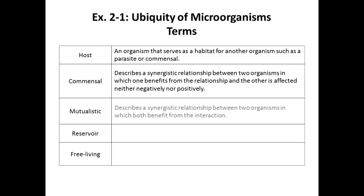Mutualistic relationships definitely exist. Non-pathogenic E. coli in your gut is a great example — you feed it and give it a place to live, and it produces vitamins for you like vitamin K. Both sides benefit. I remember mutualistic by thinking of a good marriage: both partners should benefit. Commensal is like communism — everyone's supposed to get equal, no negative, no positive.